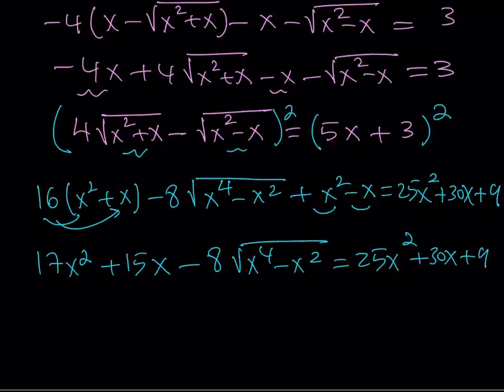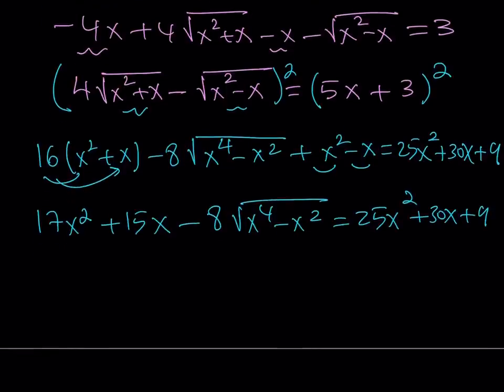Now, this is what I'd like to do. I want to put everything on the same side and write it as a sum and set it equal to 0. So let's go ahead and put everything on the right-hand side. I'm going to be subtracting 17x squared from 25, so that's going to give me 8x squared. Subtract 15x from 30x, that's going to give you positive 15x.